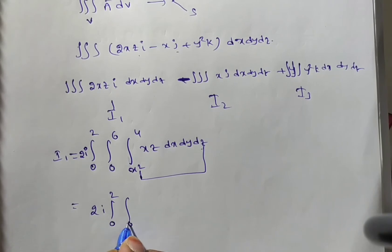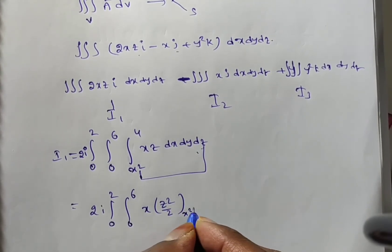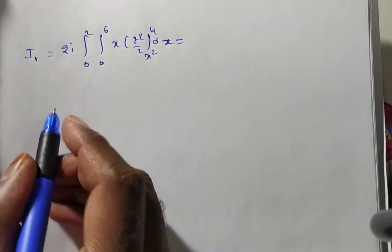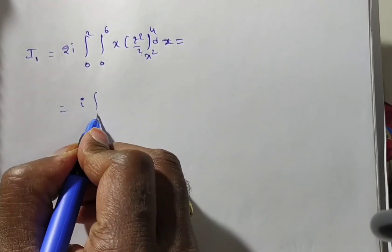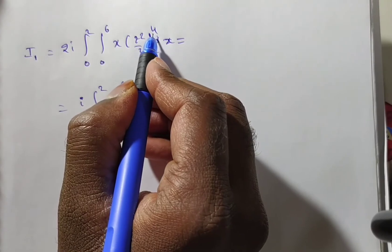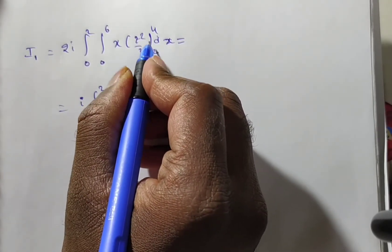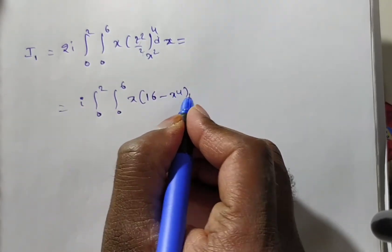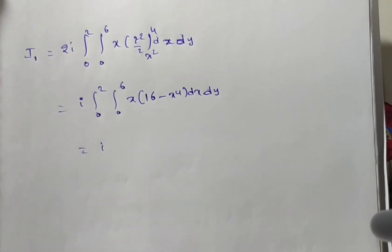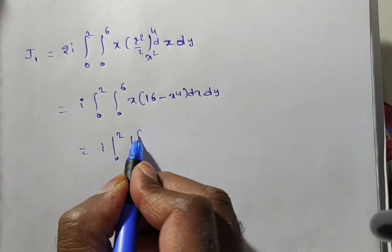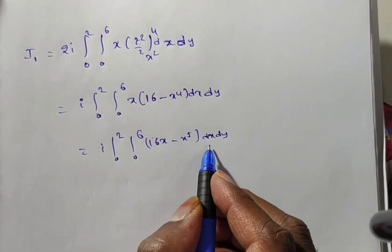After cancelling the factor of 2, we get i times the integral from 0 to 2, 0 to 6, of x·(16 minus x⁴) dx dy. Multiplying through gives 16x minus x⁵. Integrating with respect to x yields 16x²/2 minus x⁶/6, evaluated from 0 to 2, times the integral of dy from 0 to 6.